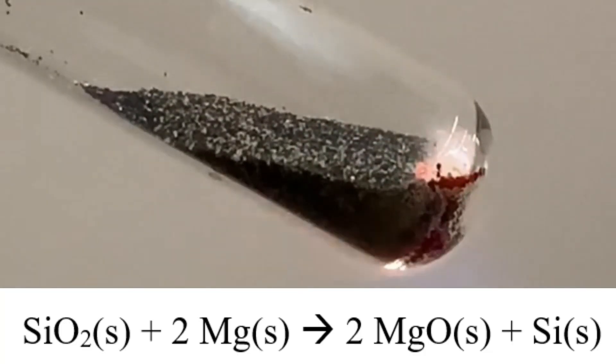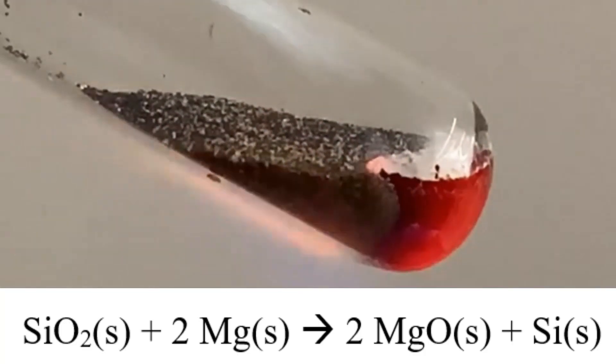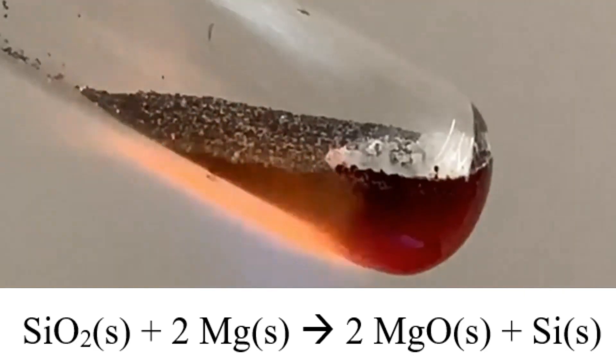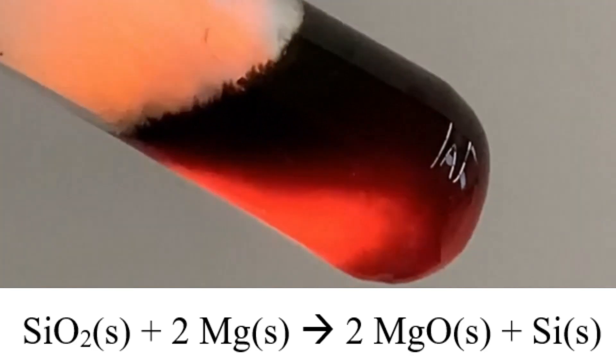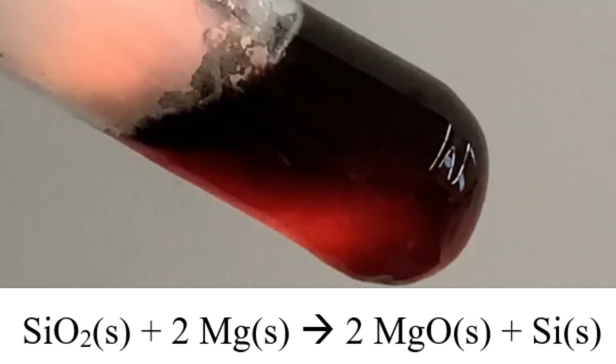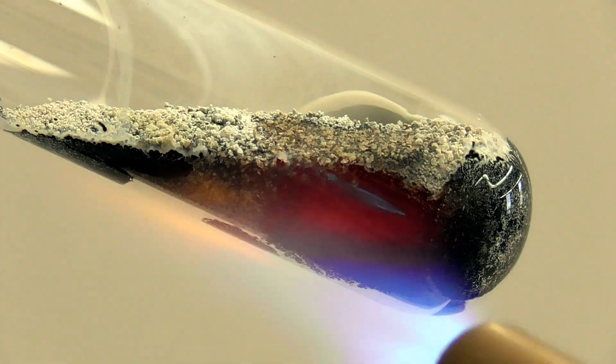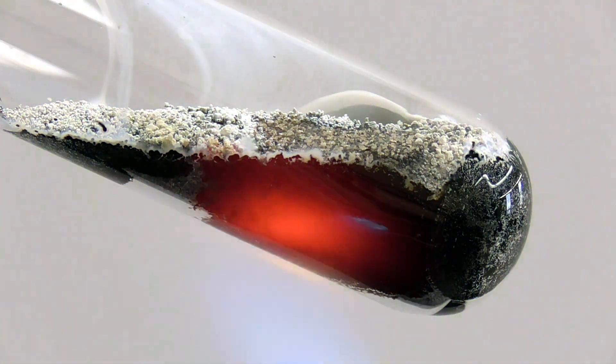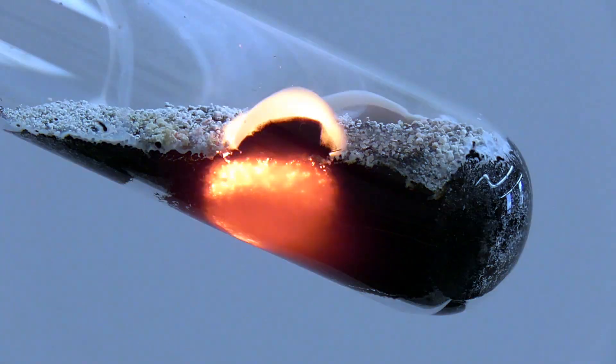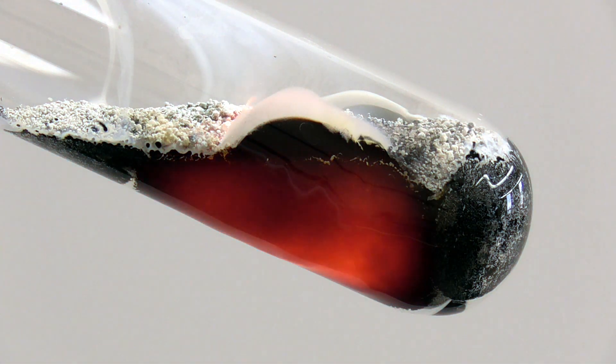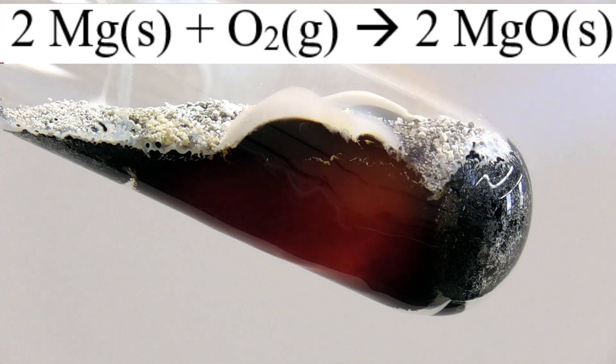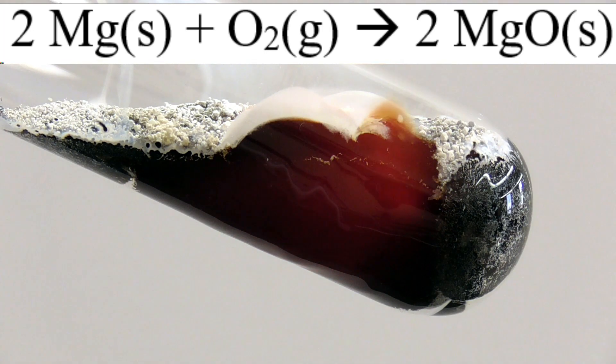Once the mixture gets hot enough, a chemical reaction takes place. In this chemical reaction, silicon dioxide reacts with magnesium metal to form magnesium oxide and elemental silicon. There are some other chemical reactions happening here too. You might notice a small amount of white product. This product forms as magnesium reacts with oxygen gas in the air to form magnesium oxide, which is white in color.